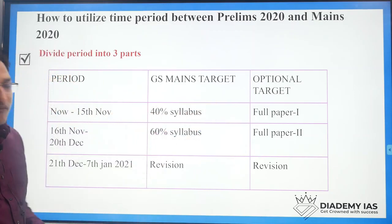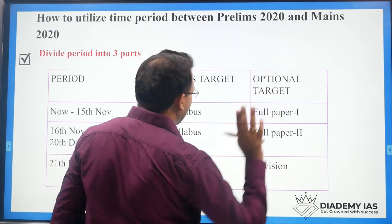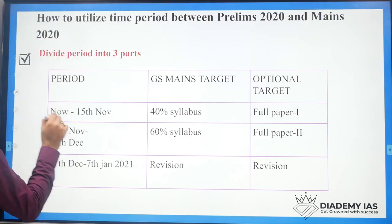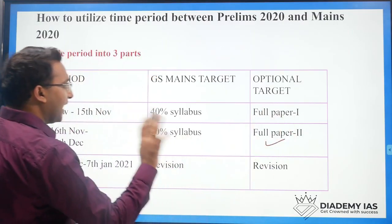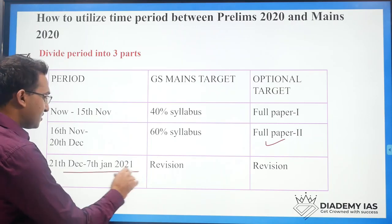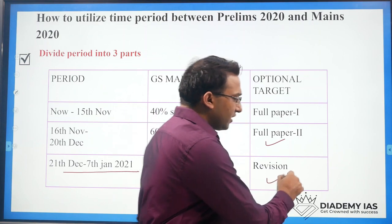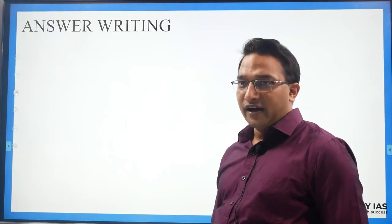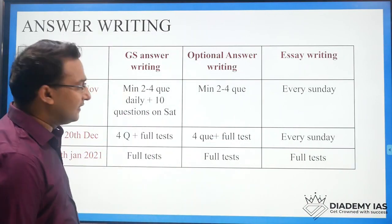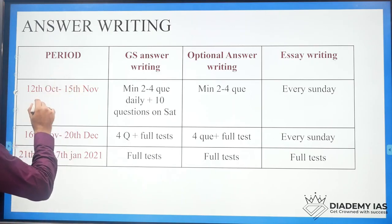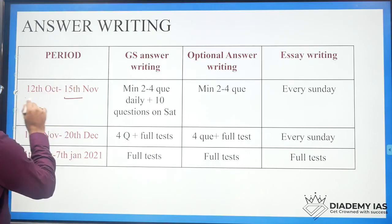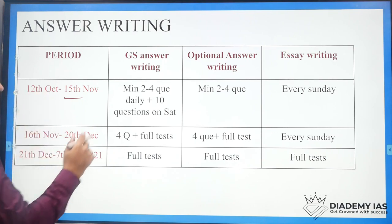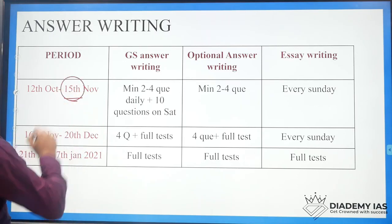In the first period, complete 40% of the GS mains syllabus and one optional paper. In the second phase, complete 60% of the GS paper and the second optional paper. From 21st December, focus only on revision. For answer writing, we will start from 12th October, as many people are appearing in examinations on 11th October.